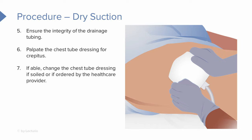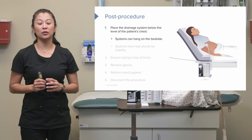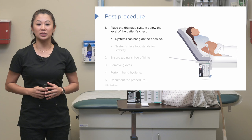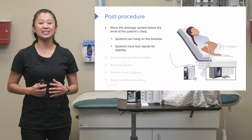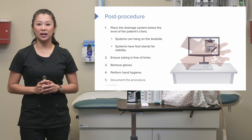Now after the system has been set up, here are a few important considerations. Place the drainage system below the level of the patient's chest — this can't be emphasized enough. For convenience, you can hang the system at the bedside using the hooks that come with it, or place it on the floor using the foot stands. Always check the tubing and make sure it's free of kinks. Then remove your gloves, perform hand hygiene, and make sure you document the procedure.